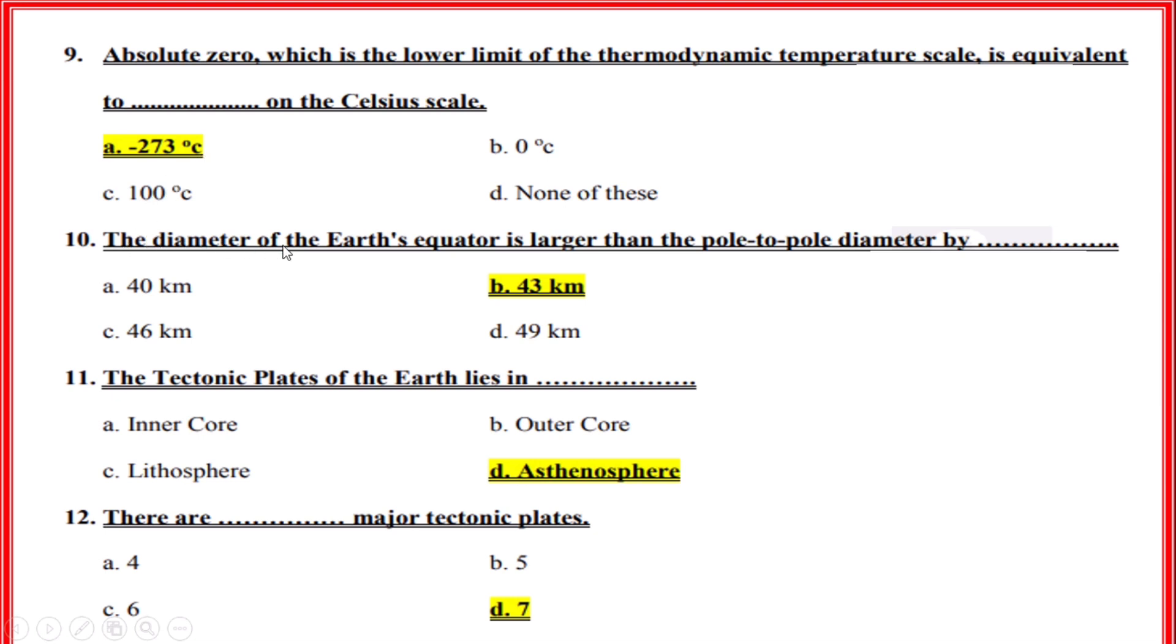The diameter of the Earth's equator is larger than the pole-to-pole diameter by? Correct option: B, 43 kilometers.